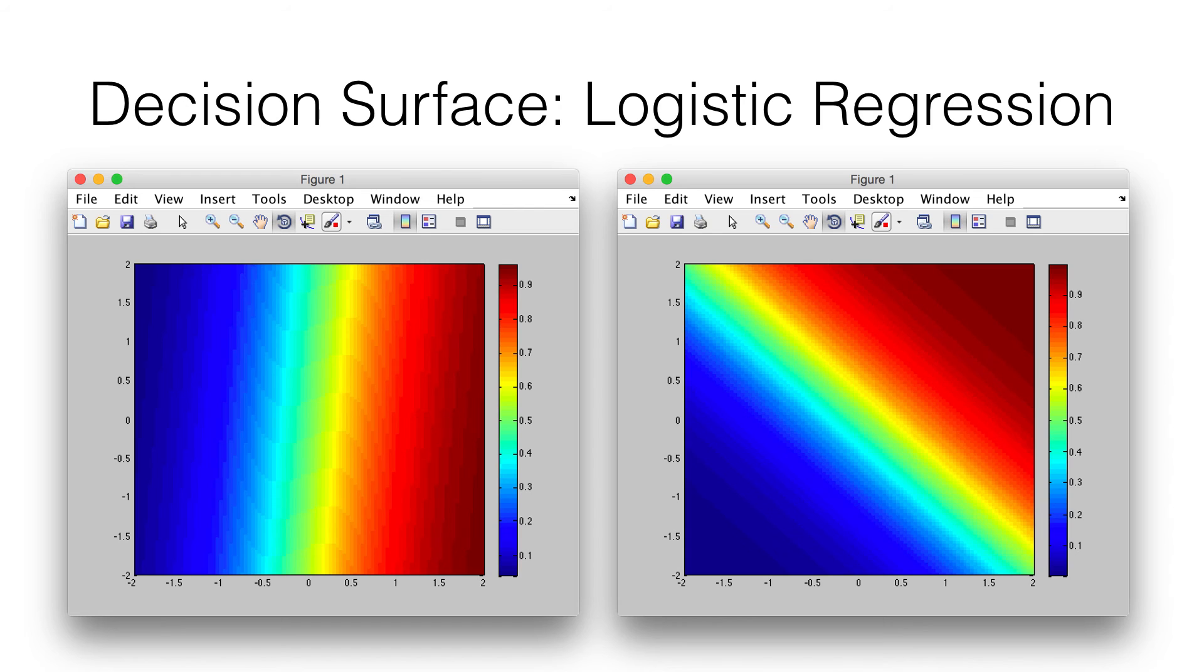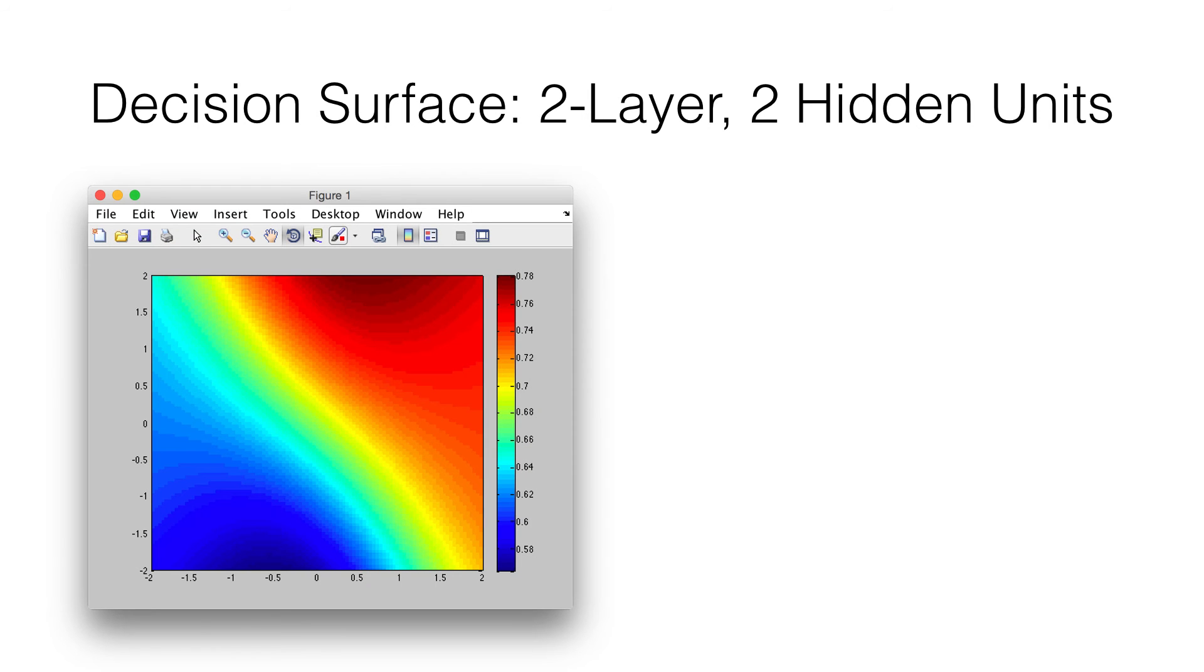But now if we add another layer, then we get a two-layer unit. Let's say in the hidden layer we have two hidden units. If we add that in and initialize weights randomly, these are just random models. We get pictures that look like this, which aside from being very pretty, obviously also show some curviness that we weren't able to capture with just a linear model.